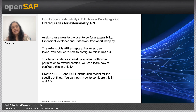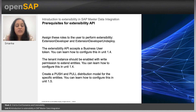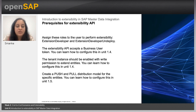Now let's look at the prerequisites for the extensibility API. To make sure the extensibility API is working, whether you are using it via the MDO UI or as an API, assign the required roles to the user. For example, the Extension Developer role is required for creating extensions. The extensibility API accepts a business user token. You can learn how to configure this in Unit 1.4, which covers service authorizations.